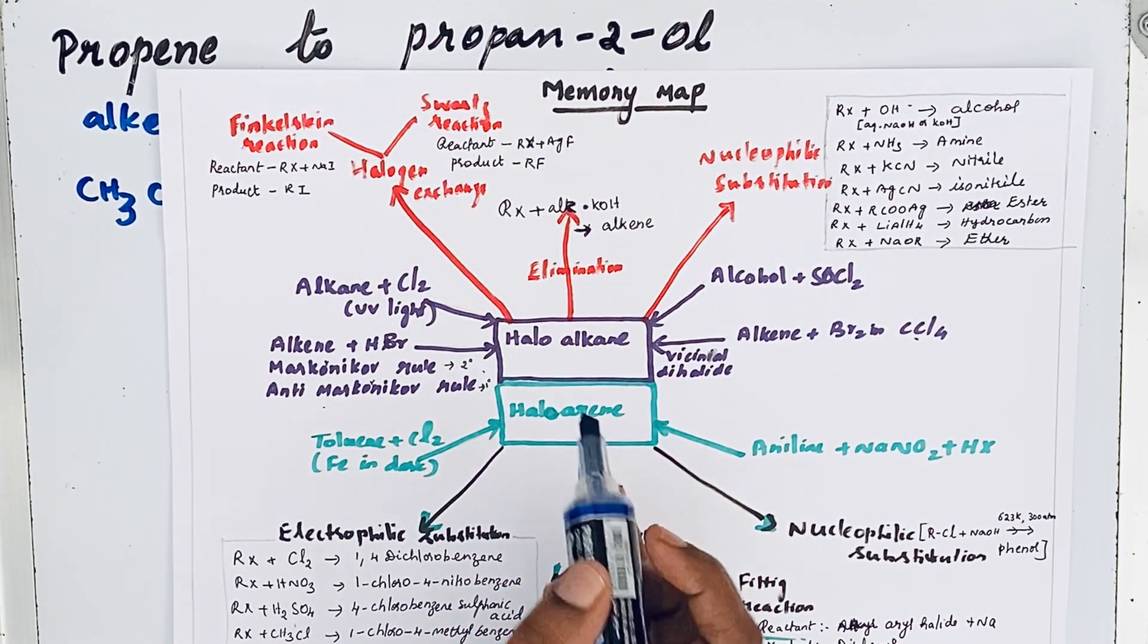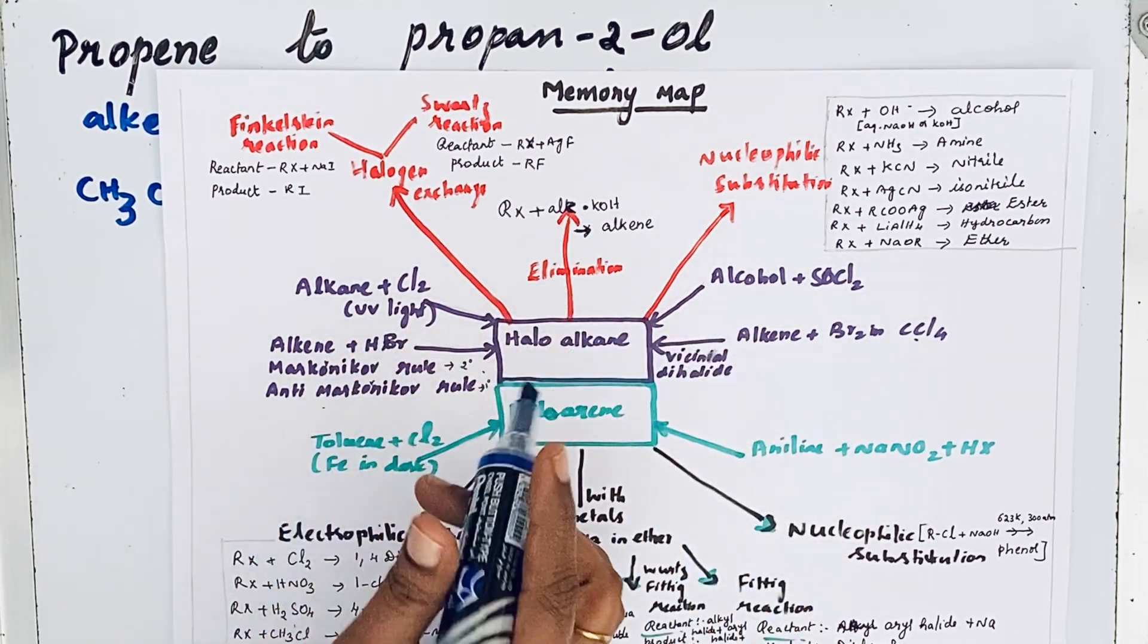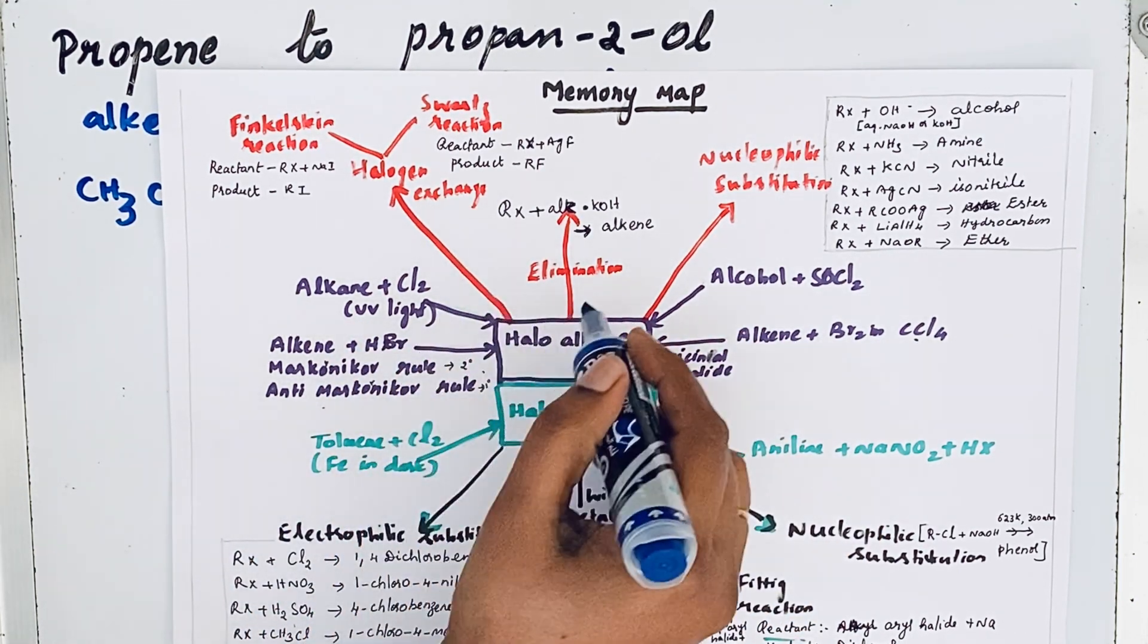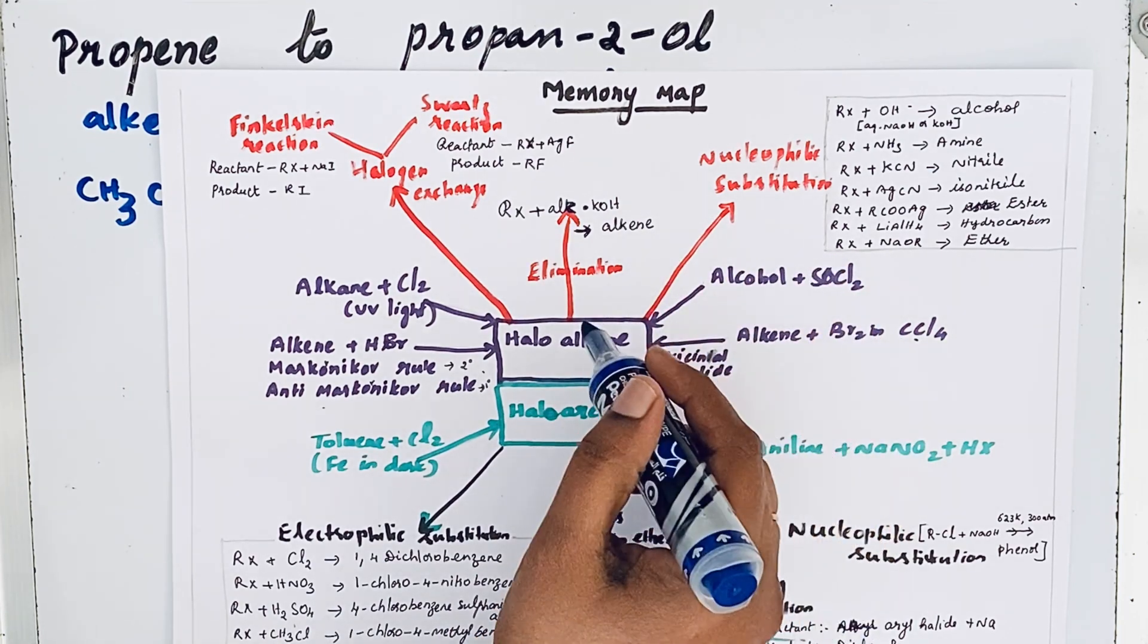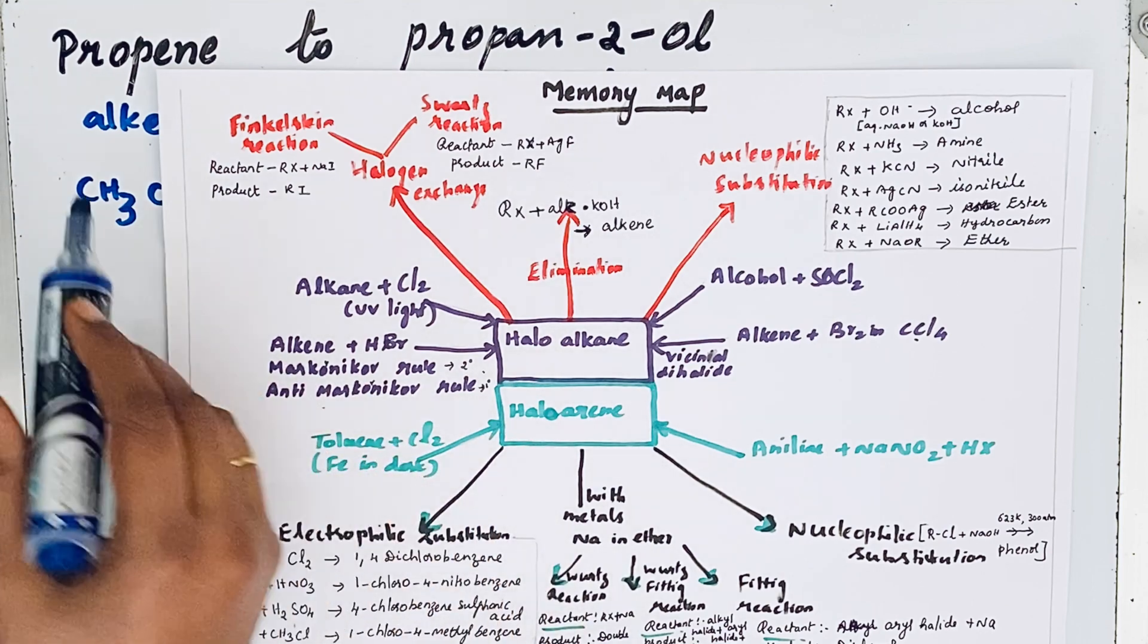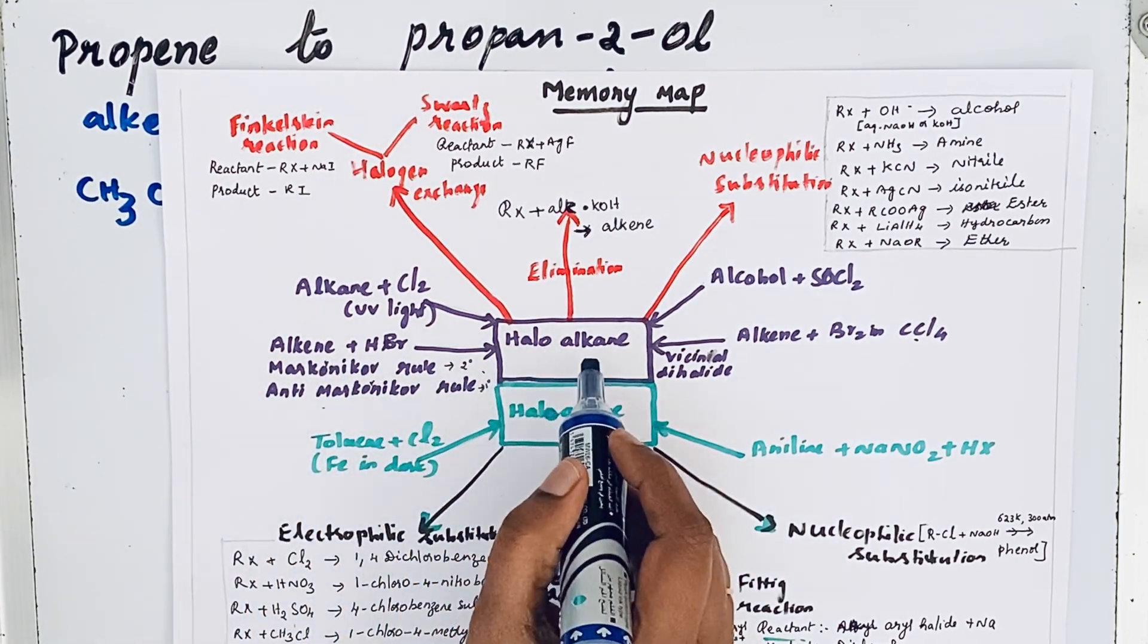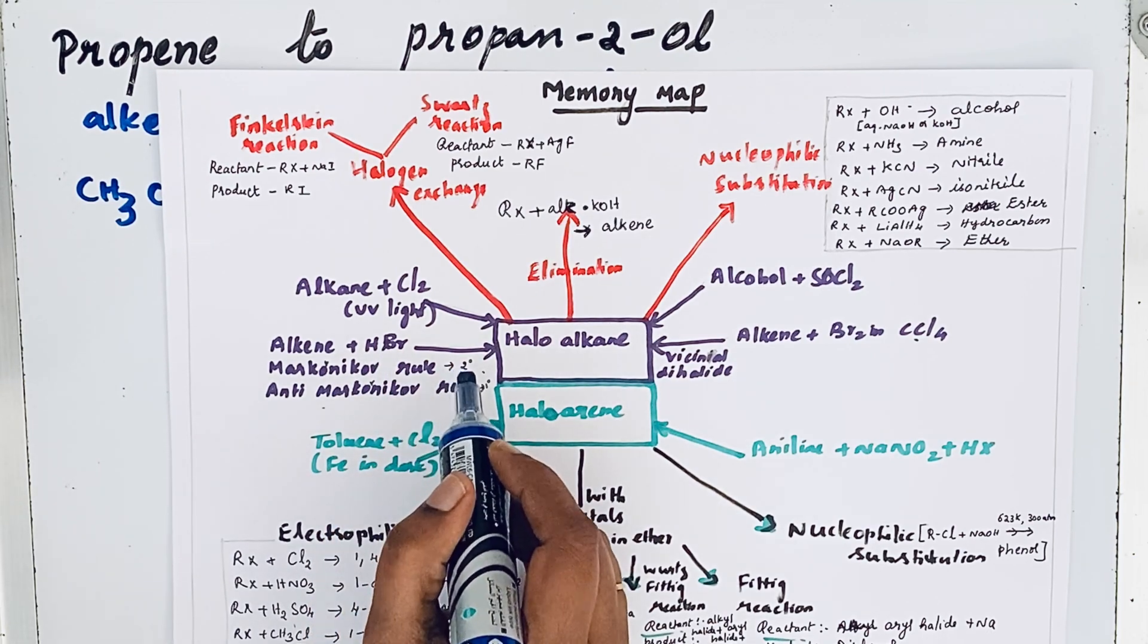So we are going to see about the halo alkane. The purple color represents the preparation of halo alkane, the red color marker shows reactions involving halo alkane. If you see that, alkene propene is an alkene, so that alkene can be converted into halo alkane by HBr.